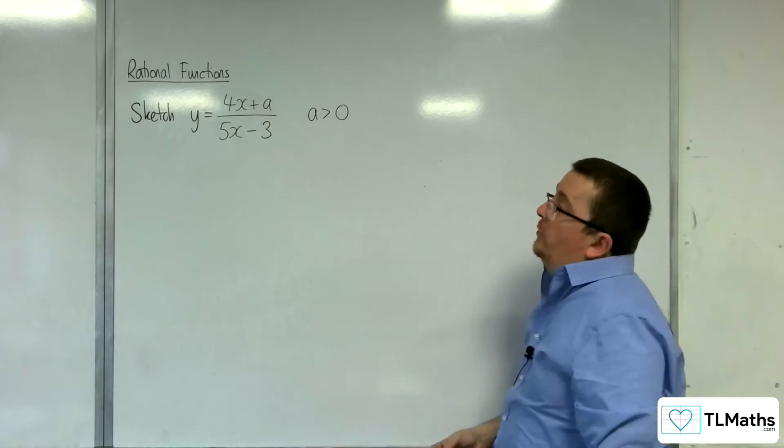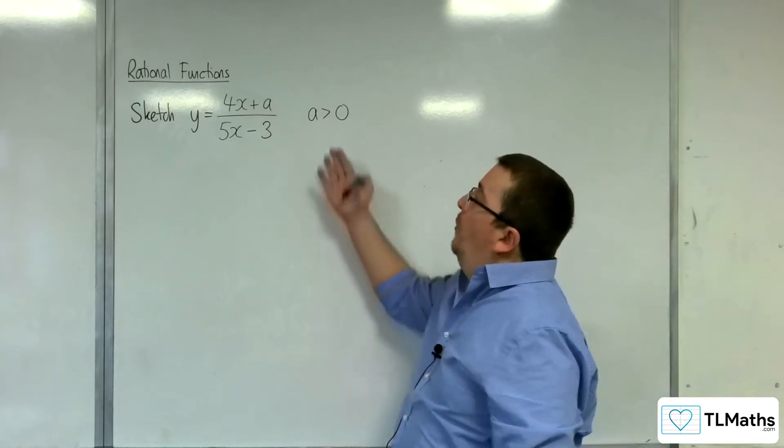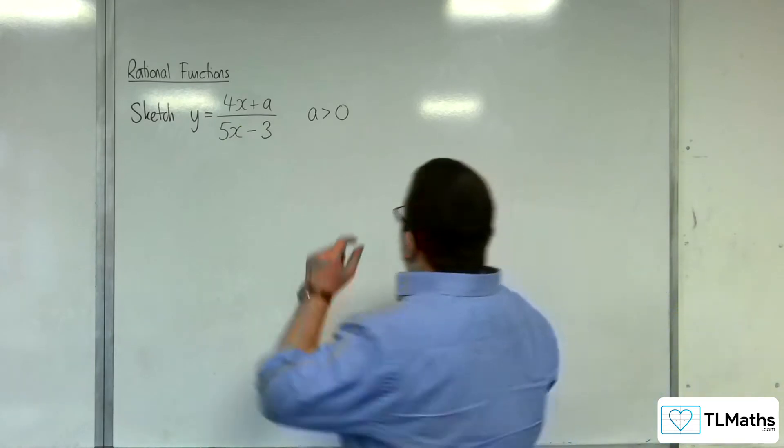In this video, I'm going to be sketching y equals 4x plus a over 5x take away 3, where we've been told that a is greater than 0. So a is positive.